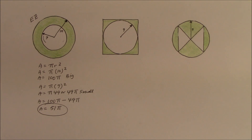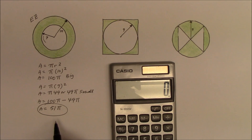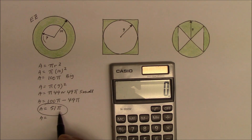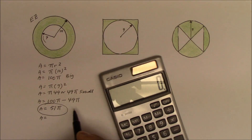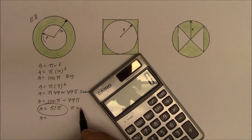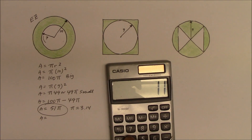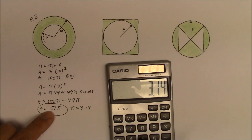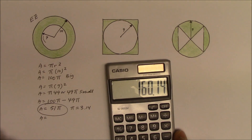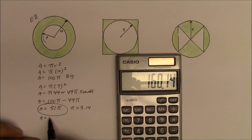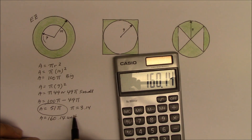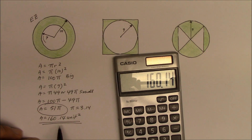If you have a teacher who insists on a real number, then use pi approximately equal to 3.14. So 3.14 times 51 equals 160.14 units squared. That becomes the final answer as a real number.